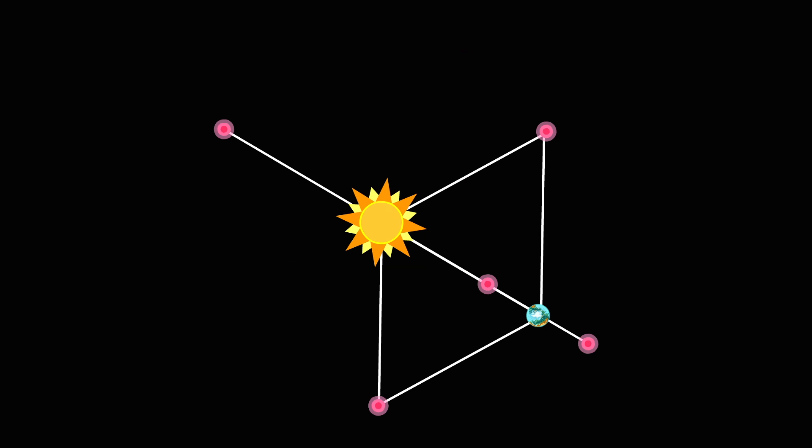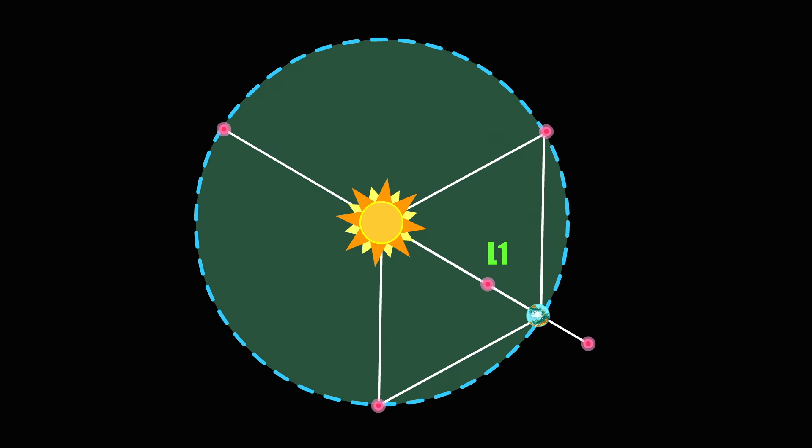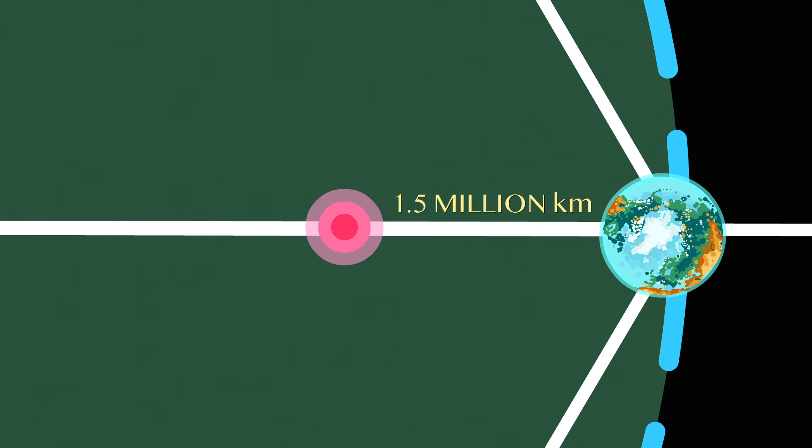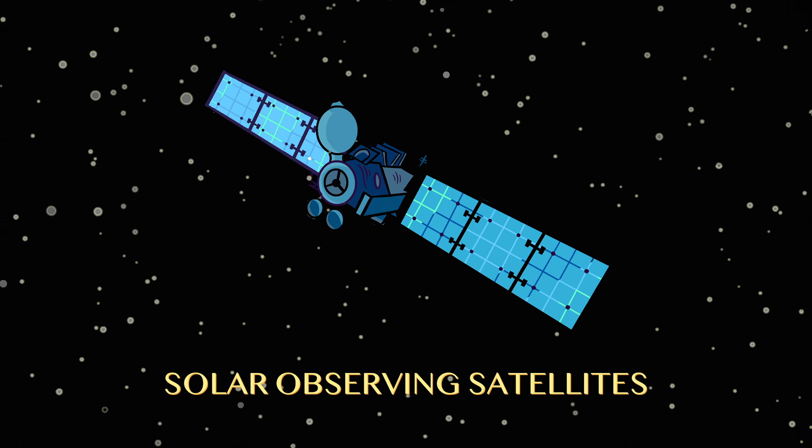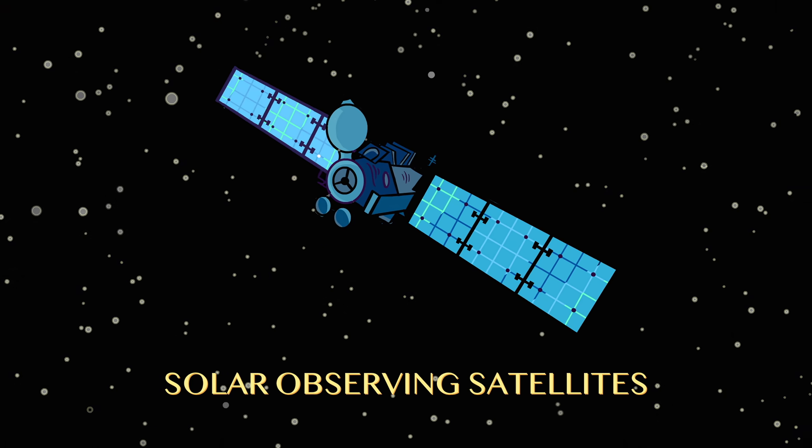Consider the five Lagrange points generated by the Sun and the Earth. L1 is located inside Earth's orbit, about 1.5 million kilometers away from the planet. With this panoramic view of the Sun unobstructed by Earth's shadow, L1 is the perfect place for solar-observing satellites.